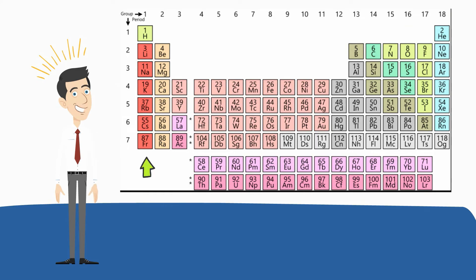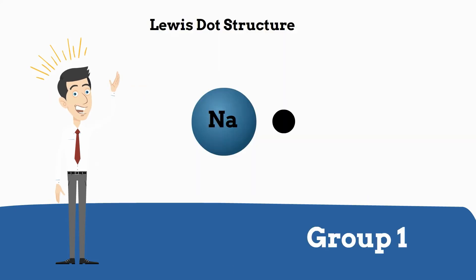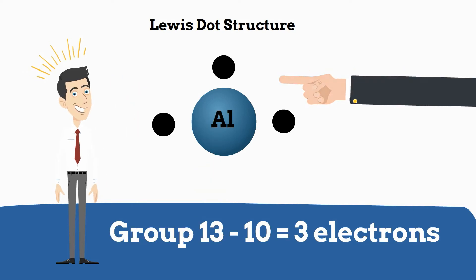An element from group 1 will look like this. An element from group 13 will look like this. Now for groups 13 through 18, you subtract 10, and this will be the number of electrons in the outer shell.